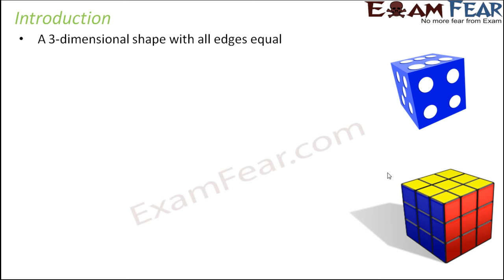As we have studied in our previous classes, a three-dimensional shape with all edges equal is a cube. Any shape which has three parameters — length, breadth, and height — is a three-dimensional shape. A cube is that three-dimensional shape where all three parameters are equal, that is, length equals breadth equals height.